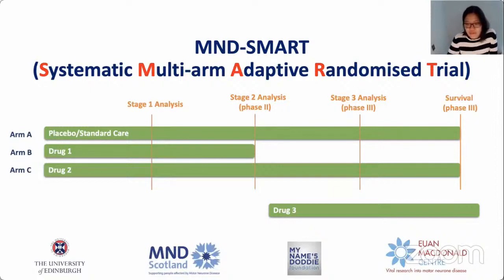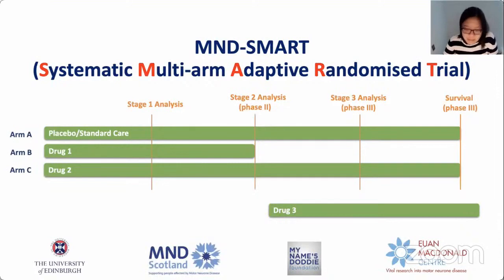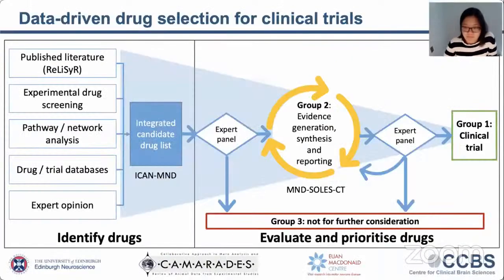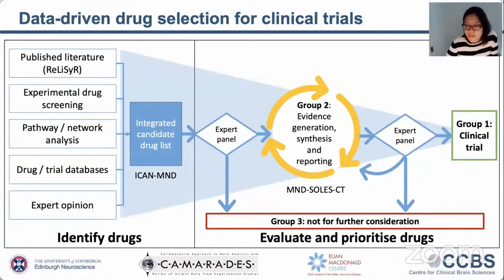They are also adaptive — at set analysis stages, drugs which are not effective are identified early and dropped, and drugs which are effective are taken from stage to stage, including from phase two to phase three seamlessly. Using this design, we are also able to add new drugs to the pipeline to be tested rather than starting standalone trials from scratch. We therefore now have a way of testing more drugs quicker in a much more efficient way. So the question now is: how do we best select drugs to take forward to clinical trial?